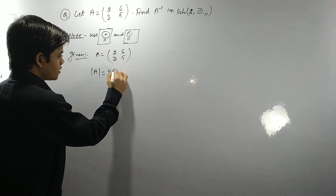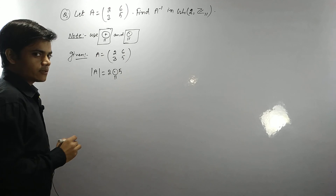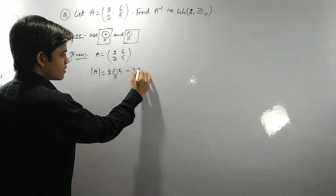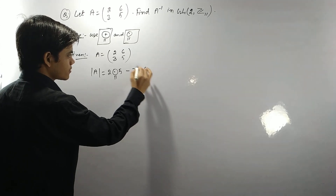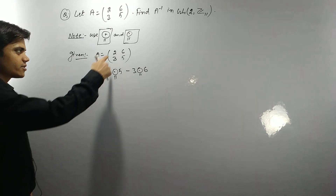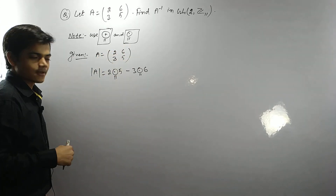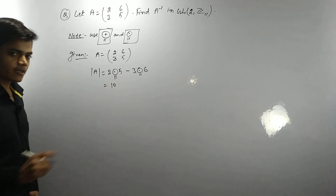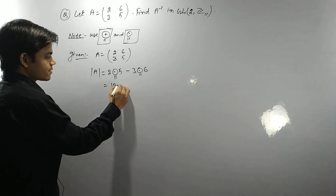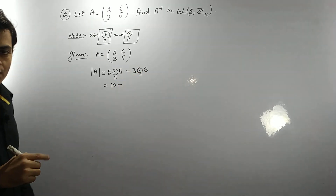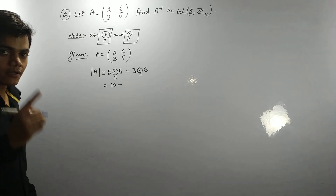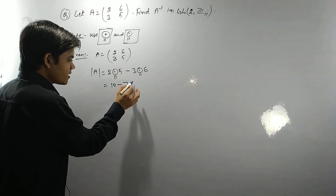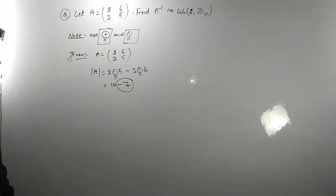To find the determinant using multiplication modulo 11: this is (2×5) minus (6×3). Now 2×5 = 10, and since 11 > 10, it is simply 10. Then 6×3 = 18, and 18 divided by 11 gives remainder 7. So the determinant is 10 minus 7.